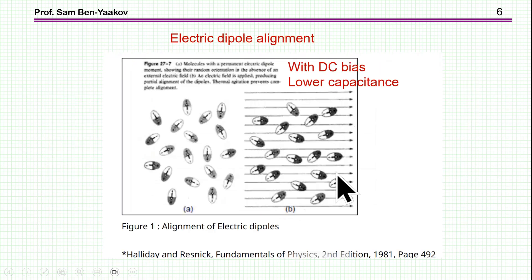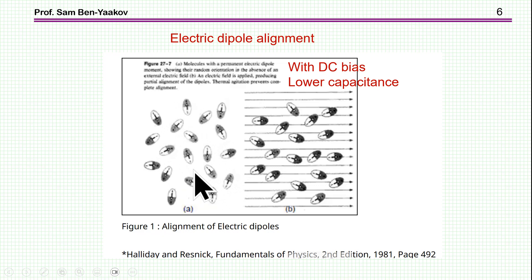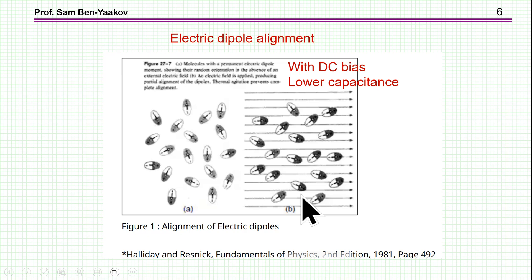What is the reason for this DC bias sensitivity? It turns out that the dielectric material of the Class II capacitor — the ferroelectric material — has electrical domains. When these domains are randomly arranged, you have the maximum capacitance, because there is room for rearrangement. If they are already arranged, there is less room for rearrangement, and therefore the capacitance is smaller. This is what happens when you expose the capacitor to a DC bias — it arranges the domains, and therefore the small signal capacitance drops.